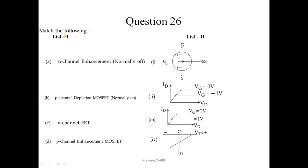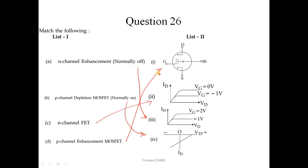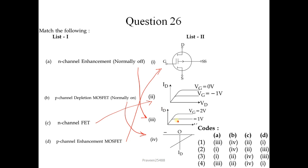Question number 26 - match the following. For n-channel enhancement MOSFET, the VI characteristic is given in option 3. For p-channel depletion MOSFET, the VI characteristic is given in option 4. For n-channel JFET, the VI characteristic is in option 2. For p-channel enhancement MOSFET, the symbol is in option 1. So the correct sequence is 3-4-2-1, and the correct answer is option 1.